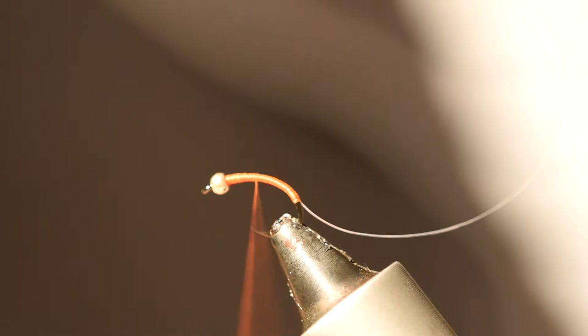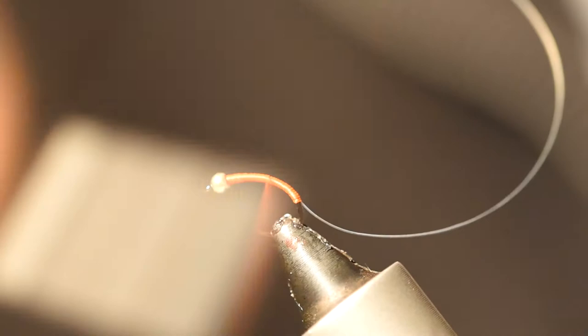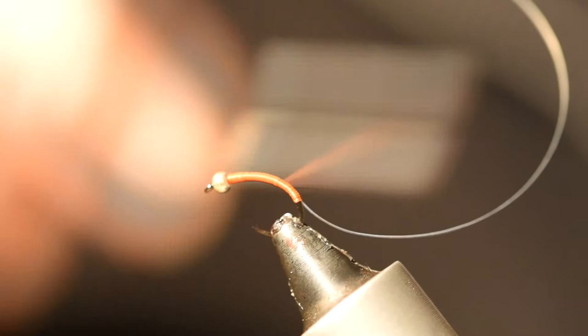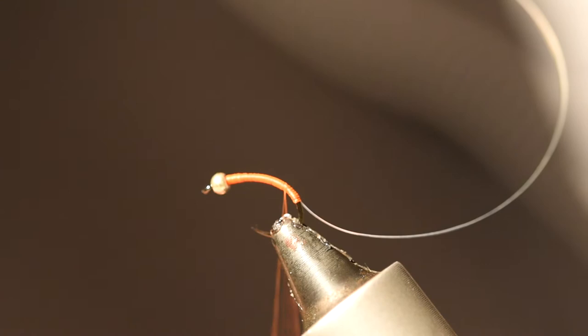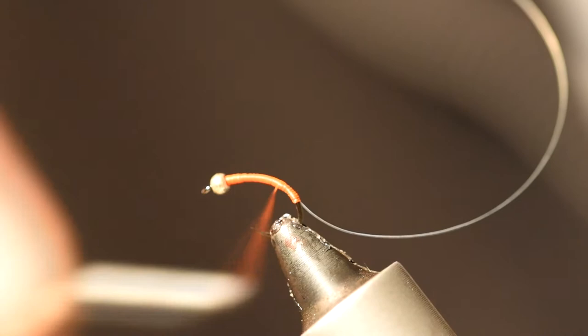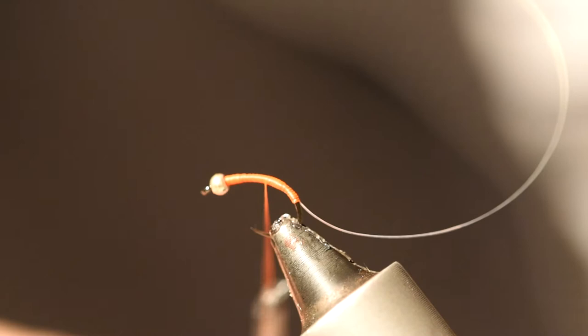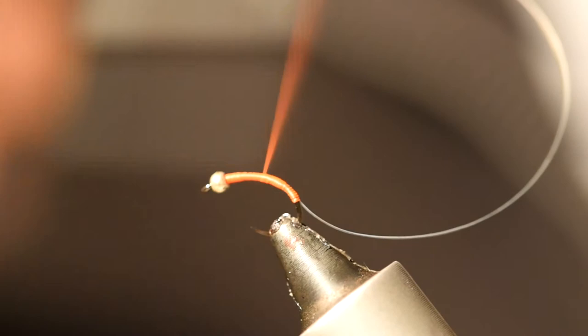You'll be building up a bit thicker behind the bead than everywhere else - that's where your thorax is going to be. Once you're happy with your body shape, bring the thread back up. The act of winding it on is actually tightening it, so you have to keep undoing the twist. Bring your thread back up behind the bead.